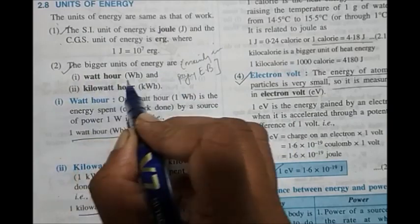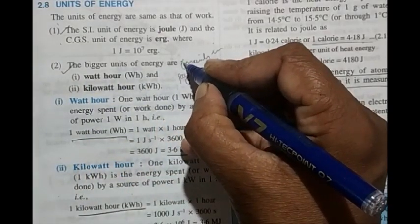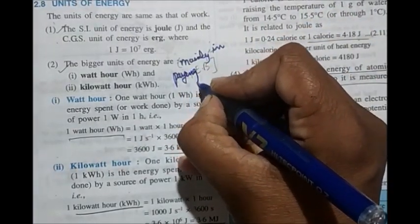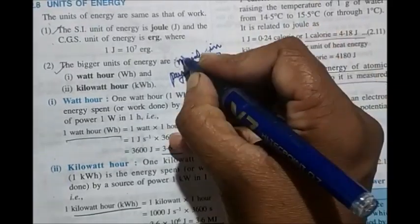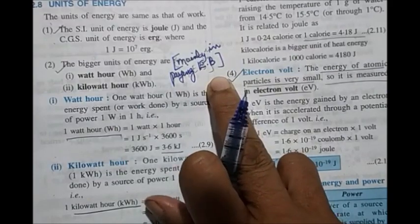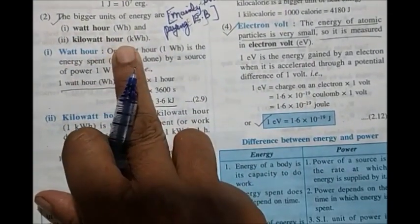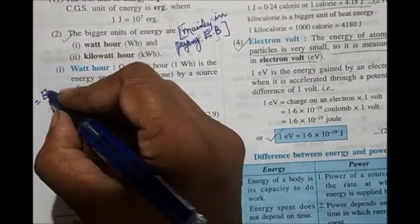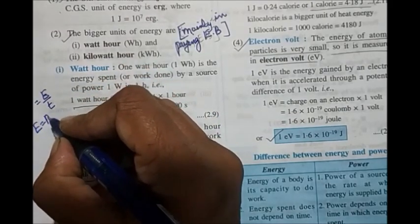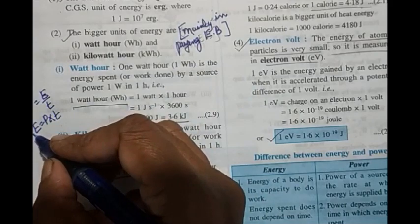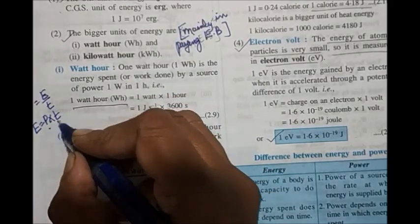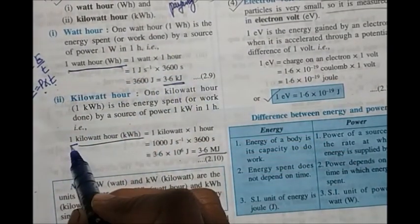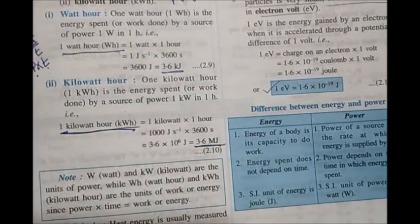The bigger units of energy are watt-hour and kilowatt-hour, mainly used in paying electricity bills. Since power = energy / time, energy = power × time, giving units of watt-hour and kilowatt-hour. One watt-hour = 3.6 kilojoule. One kilowatt-hour = 3.6 megajoule. You should know these two values.